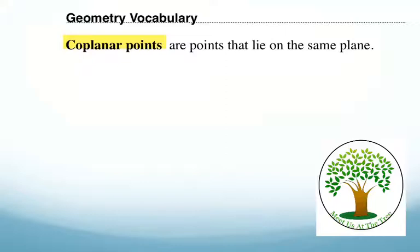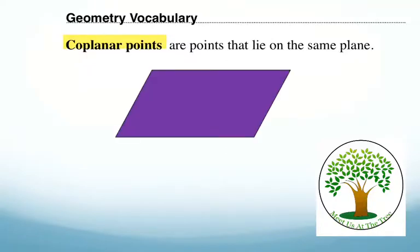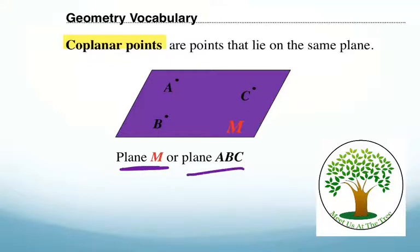Points that are coplanar are points that lie on the same plane. We have that word co again. So these are points that are together on the same plane. If I have a plane here, I have all those points on that plane. Those are coplanar. I also have a letter all by itself that doesn't have a point next to it, and we can name it with that one. So we can call this plane M or plane ABC. Notice that we do put the word plane in front of it, unlike the word line that we didn't write earlier.